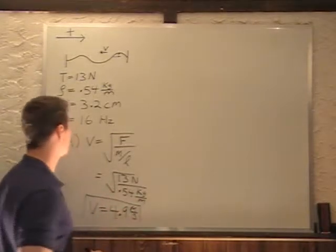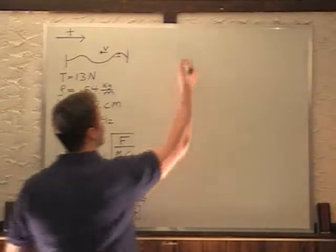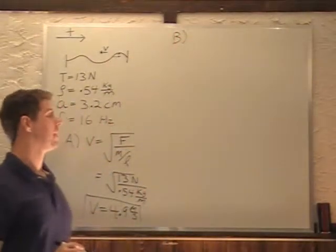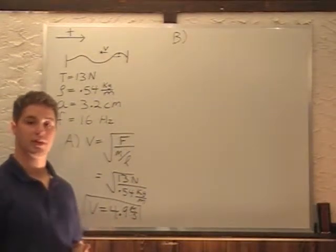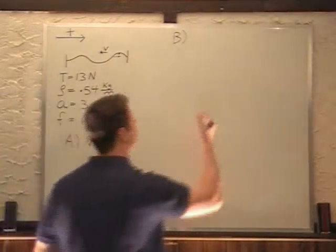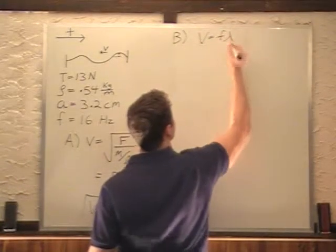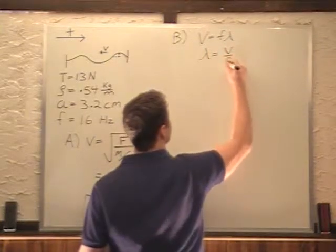So that is the velocity of our wave in this string. Part B asks us what is the wavelength of this wave? We know the velocity, we know the frequency, we can figure out the wavelength. V equals F lambda. So lambda equals V over F.